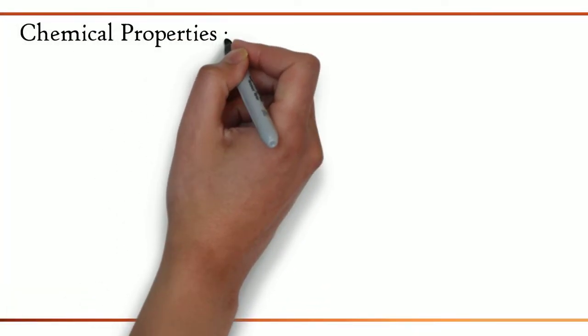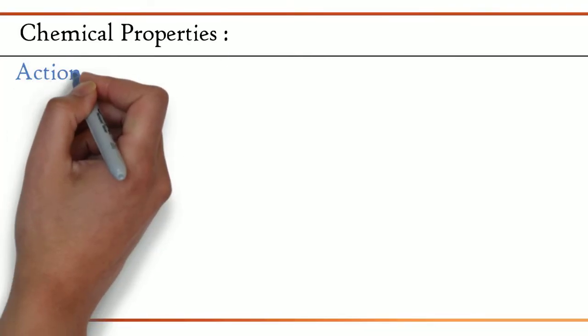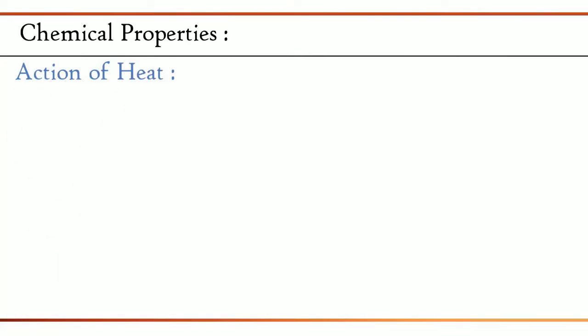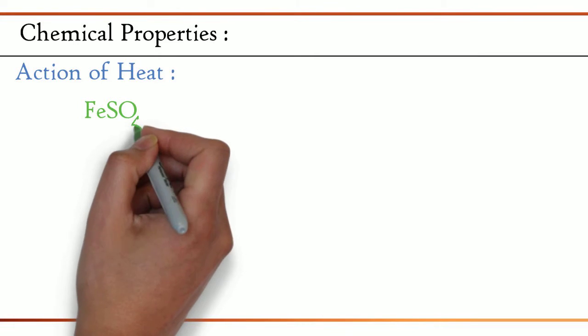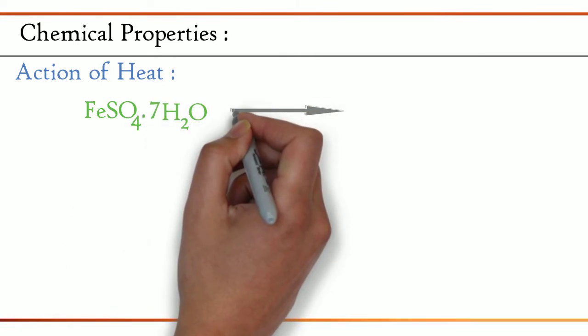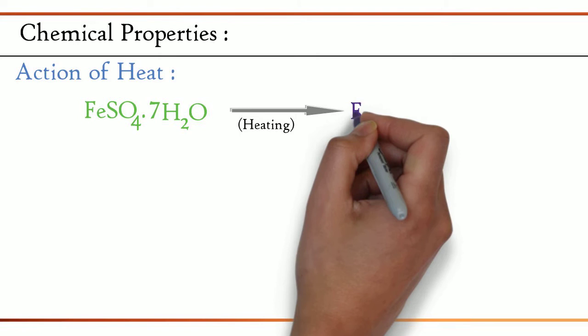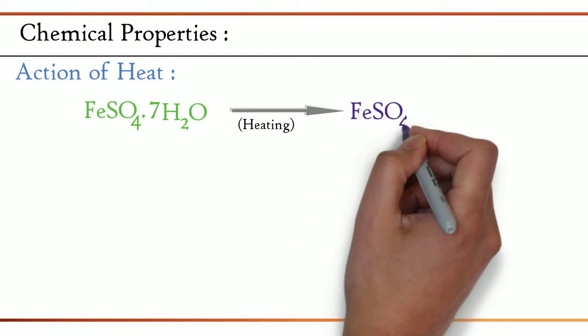Now, let us see the chemical properties. First is action of heat. The equation is FeSO4·7H2O on heating gives FeSO4.